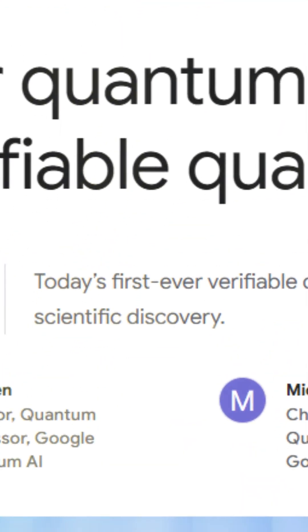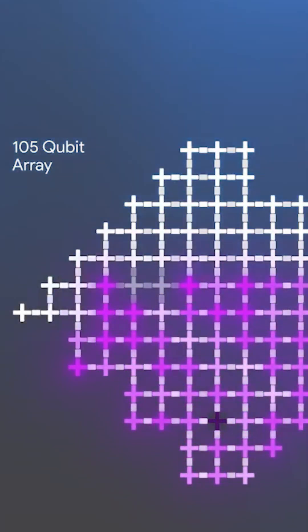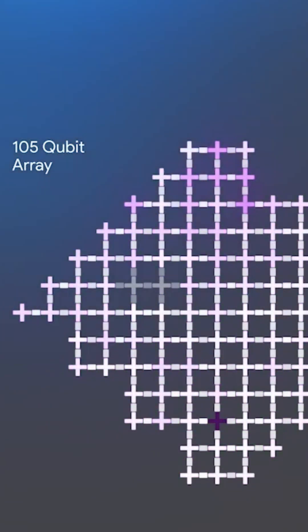But Google has just changed the game, which they announced on October 22, 2025. They proved that quantum AI isn't just faster, it's revolutionary.